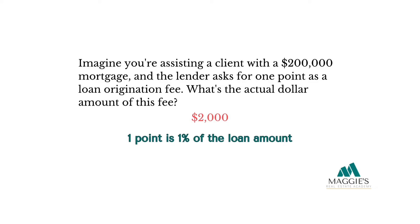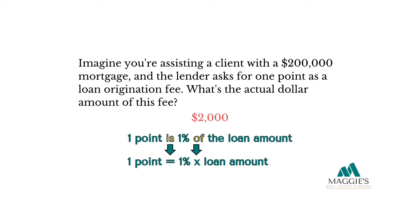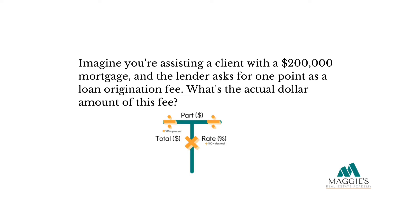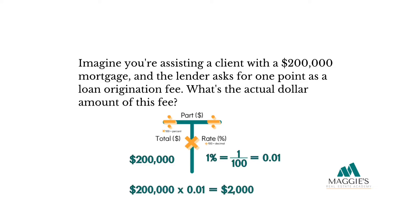Here's a little math secret: the word 'is' in math means equals and the word 'of' means to multiply. So translated into math language: one point equals 1% times the loan amount. Now let's take out the T-Chart and solve this. The 1% goes in the percent column — convert to a decimal by dividing by 100, so 1% equals 0.01. The $200,000 loan amount goes in the total column. Multiply: $200,000 times 0.01 equals $2,000.